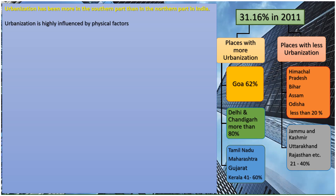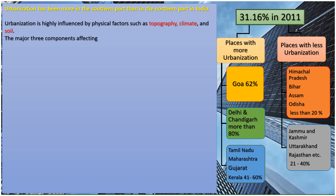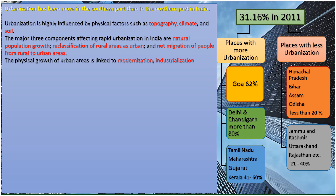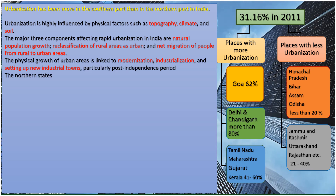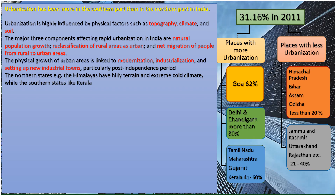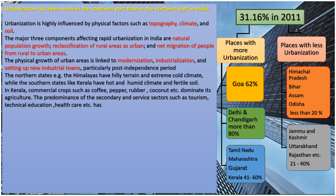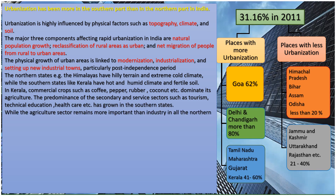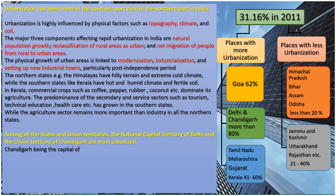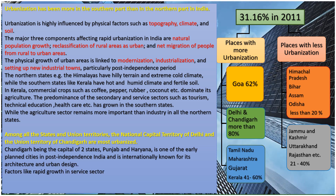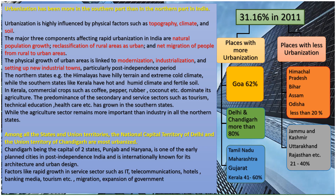Why has urbanization been more in the southern part of India than in the northern part? Urbanization is highly influenced by physical factors such as topography, climate, and soil. The major three components affecting rapid urbanization in India are: natural population growth — including social, economic, and environmental factors; reclassification of rural areas as urban; and net migration of people from rural to urban areas.